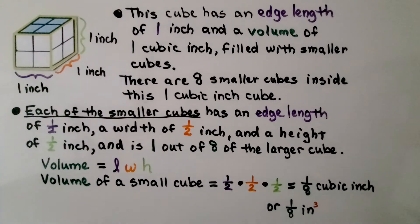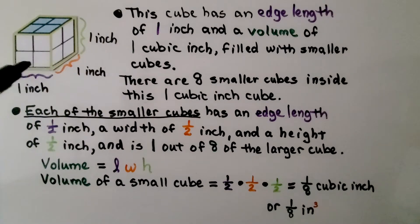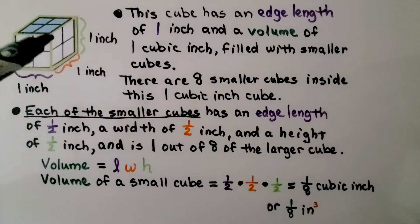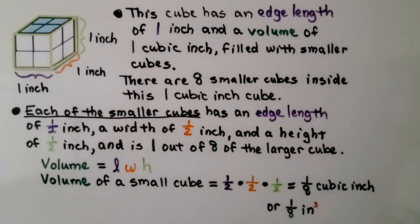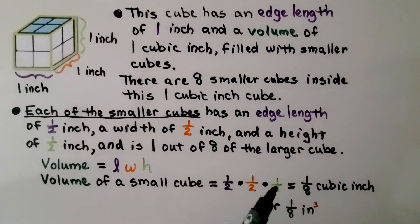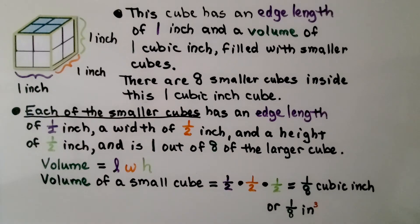There are 4 cubes on the top layer and 4 on the bottom layer. One of these small cubes would be 1 of 8 of the entire larger cube. Volume equals length times width times height, so the volume of the small cube is 1/2 inch times 1/2 inch times 1/2 inch. That gives us 1/8 cubic inch — or 1/8 inch cubed.